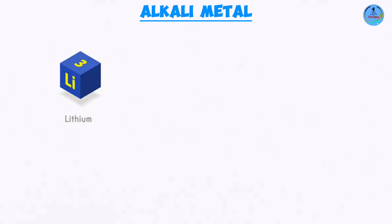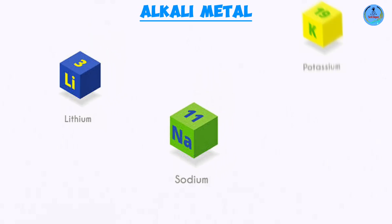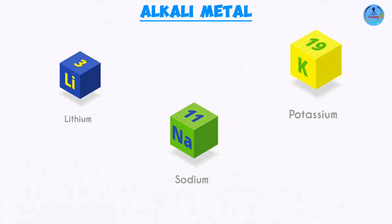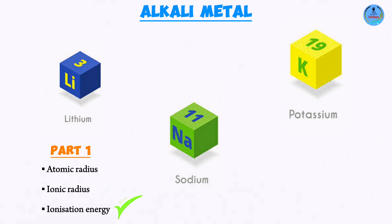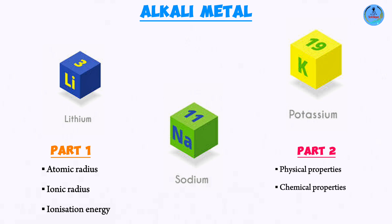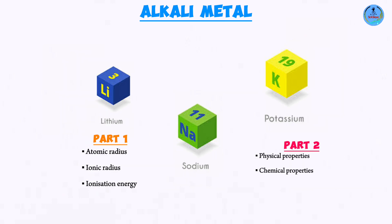This is part two of our revision series on alkali metals. In part one we discussed atomic and ionic radii as well as ionization energy. In this lesson we are going to have a thorough discussion on their physical properties as well as chemical properties.